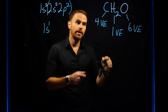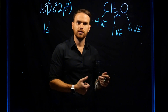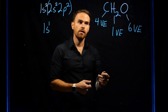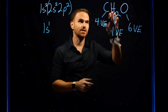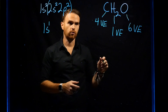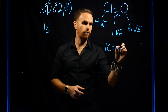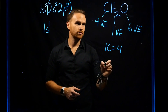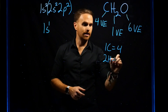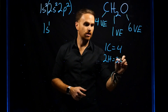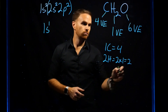Now that we know individually for each atom how many valence electrons there are, we can figure out how many valence electrons we have for this entire molecule. Since we have one carbon, that's four valence electrons. We have two hydrogens — that's going to be 2 times 1 for a total of 2.